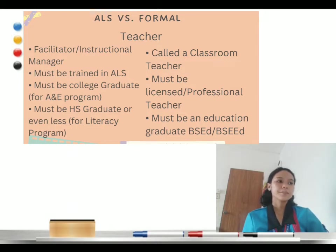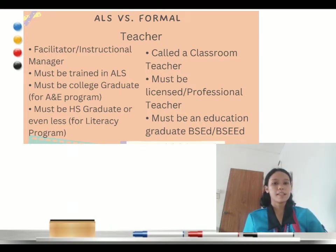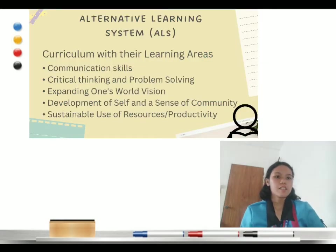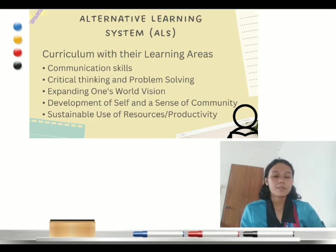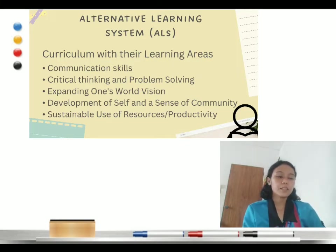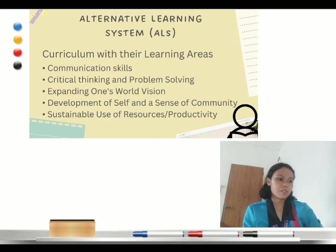For formal education, the teacher is called a classroom teacher, must be a licensed or professional teacher, must be an education graduate — BSED or BSEED. Under the alternative learning system, the learning areas consist of communication skills including reading, writing, listening, and speaking; critical thinking and problem solving; expanding one's world vision; development of self and a sense of community; and sustainable use of resources or productivity.